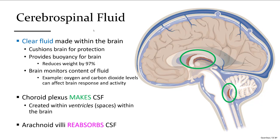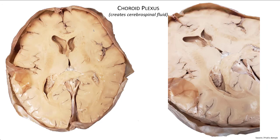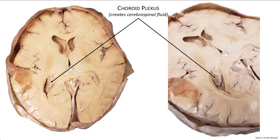Once the cerebrospinal fluid made by the choroid plexus travels down the spinal cord, it returns back up on the outside of the spinal cord and around the outside of the brain to reach the arachnoid villi, where it is reabsorbed and dumped into the dural sinuses. In a transverse cut of the brain we can see some of those spaces inside, including the granular choroid plexus tissue within the ventricles.